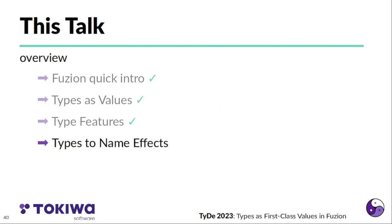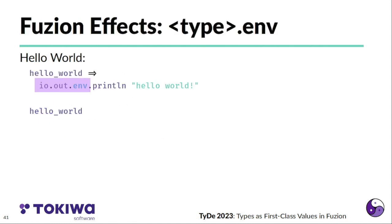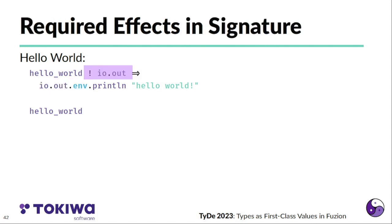And now I want to come to how types are used in Fuzion to name, to refer to effects. I haven't talked about effects yet, so I have to first say how Fuzion uses algebraic effects. As an example, I present a hello world here, which uses the io.out effect. And the syntax we use for that is we use the io.out as it is installed in the current environment. So we need to be called with an environment where this effect, we could also say capability, is present, that we can print something to io.out. Then we call this hello world to actually run the code. When this is part of a library function, we have to document that this actually has the side effect. And we do this with an exclamation mark and the type of the effect that this code uses.